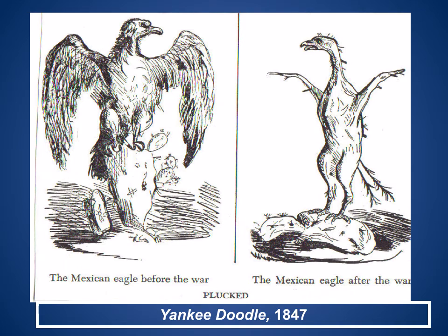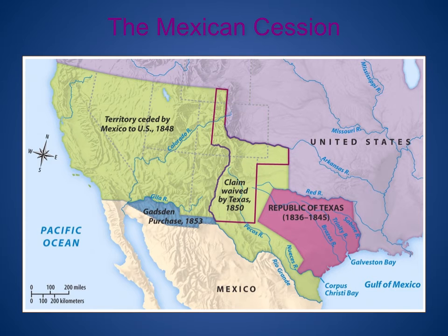A political cartoon shows the Mexican Eagle before the war — fully feathered and standing tall — and then the Mexican Eagle after the war, plucked and lacking quite a bit. Looking at the map, you can see the amount of territory we gained in the Mexican Cession in 1848 and 1850 — the majority of what we have today in the Southwest came from that.